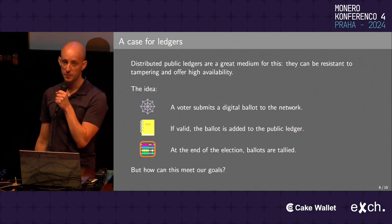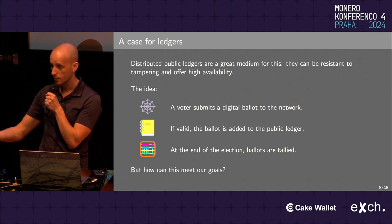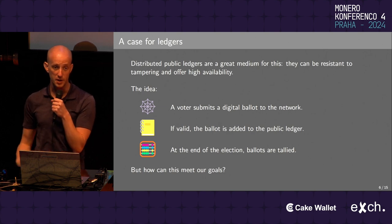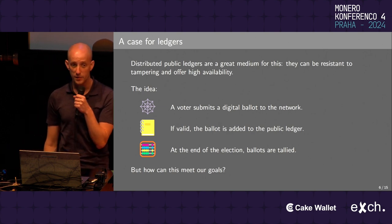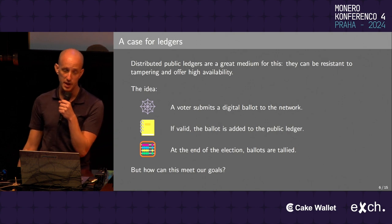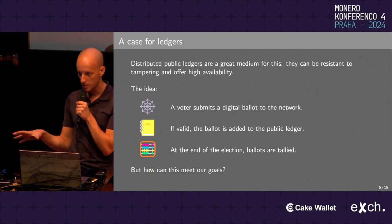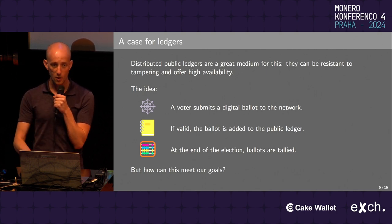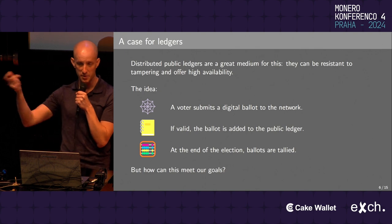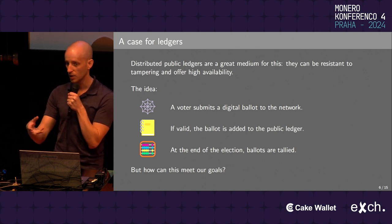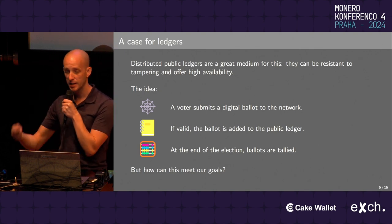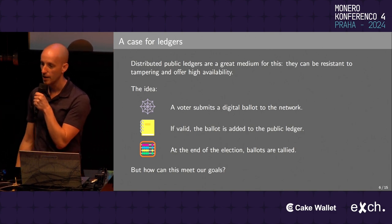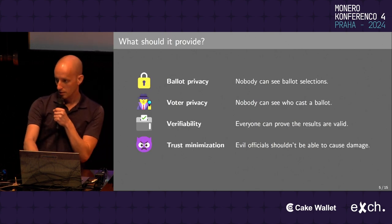This is a great case for digital ledgers. Distributed public ledgers like blockchains are a good medium — they're often very resistant to tampering thanks to cryptography and network effects, and offer high public availability, which is why they're used for digital asset protocols. The general idea is that the voter constructs their digital ballot, submits it to the network, and if it's valid, the ballot is added to the public ledger. At the end of the election, ballots are somehow tallied.